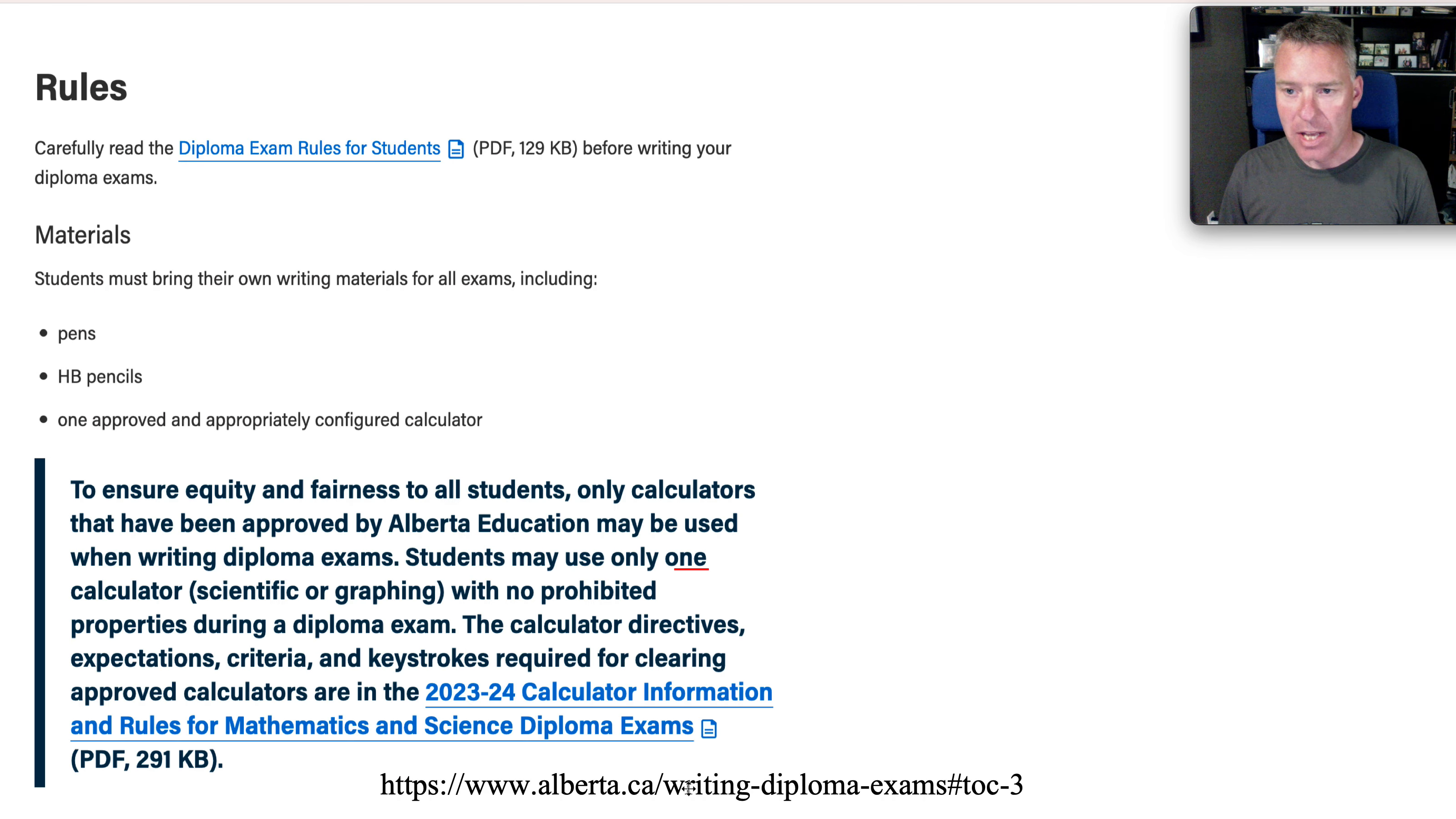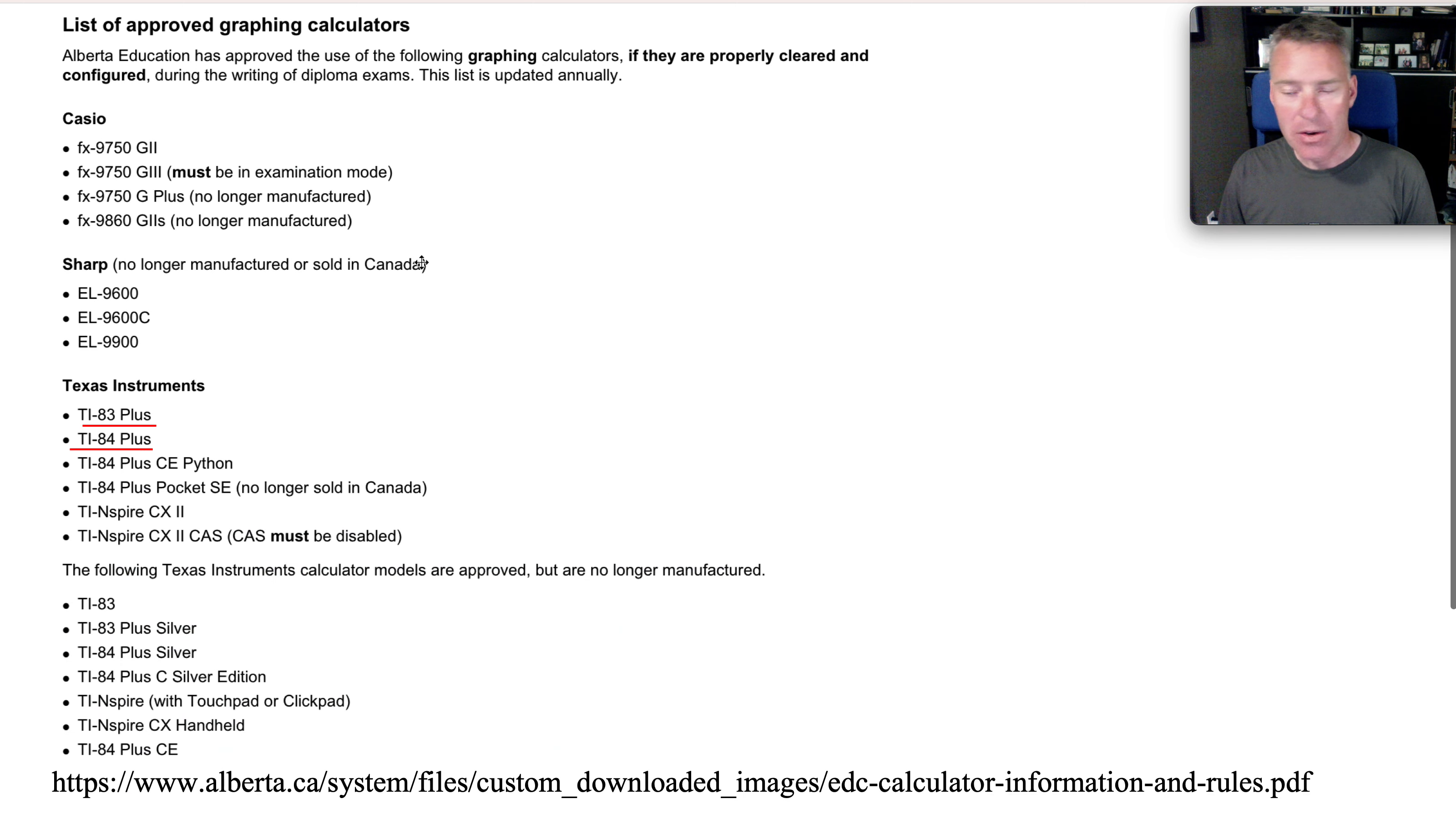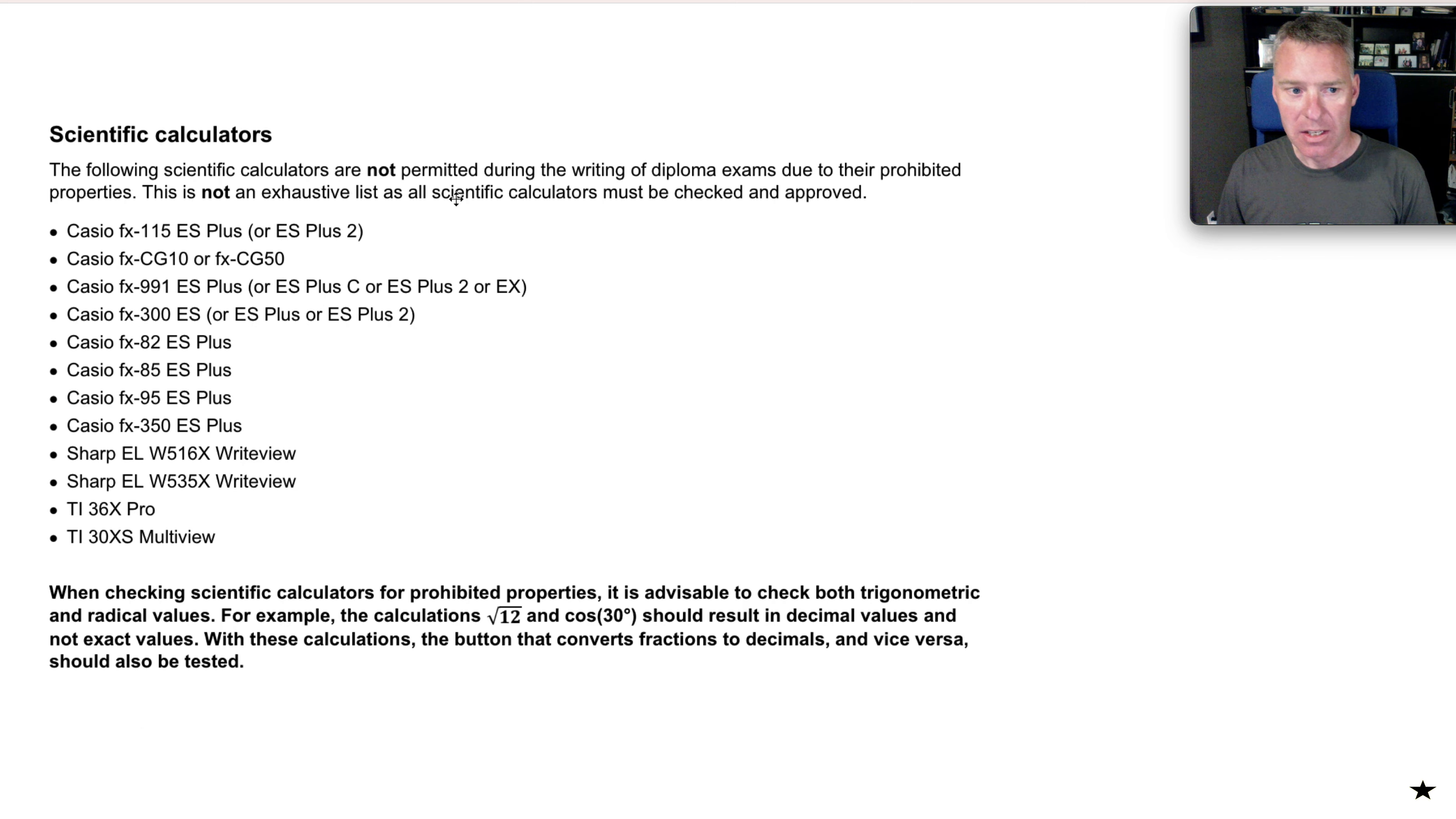As for the calculators that you're allowed to use, I grabbed this right from Alberta Ed's website from June of 2024. So you're only allowed one and the calculators that they say you're allowed are listed here. I'm not going to read them all off. I find most students have the TI-83 or 84 or some sort of plus or silver variant of those. And you can pause the video and scan the list if you want to, if you have one of these other calculators and want to see if it's here. Alberta Ed posts a few calculators that are not allowed and they're largely Casio's. I don't see students with these, so I don't think it's a big concern, but maybe you're at a school that emphasizes one of these. So you would have to find a different scientific calculator.